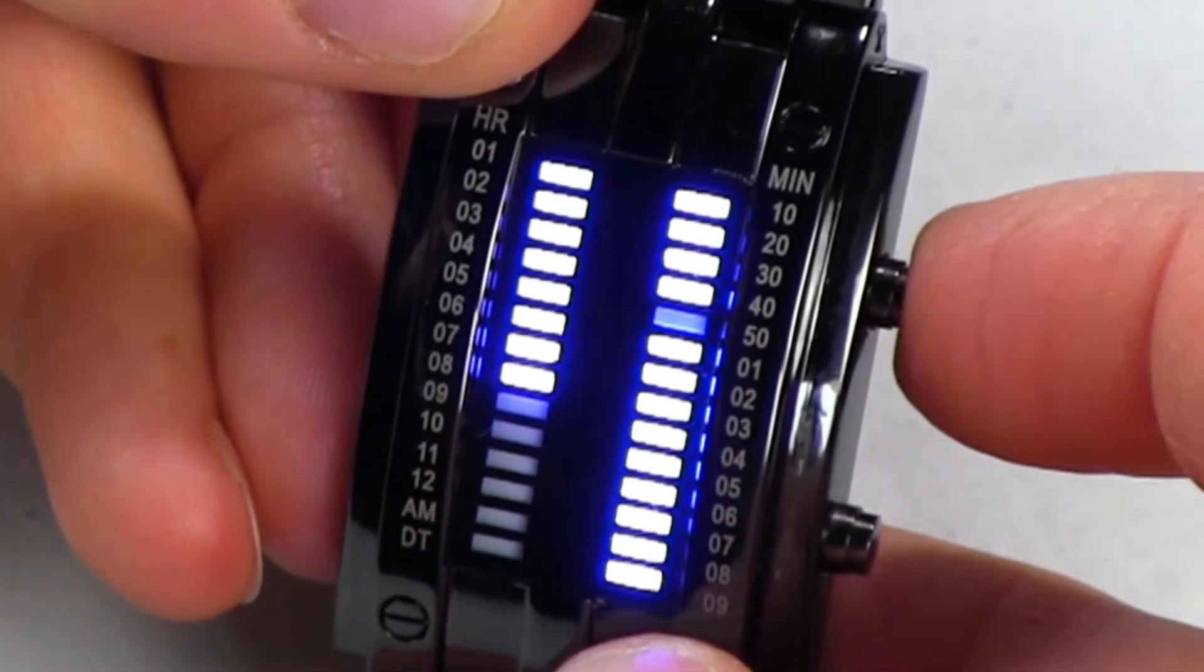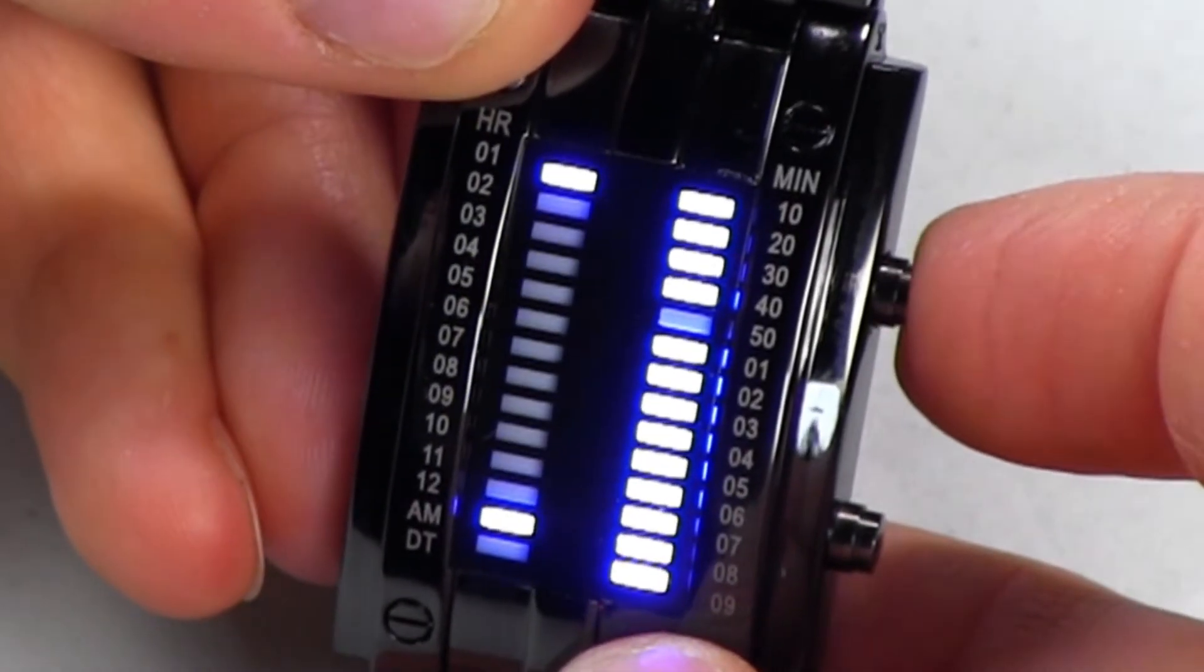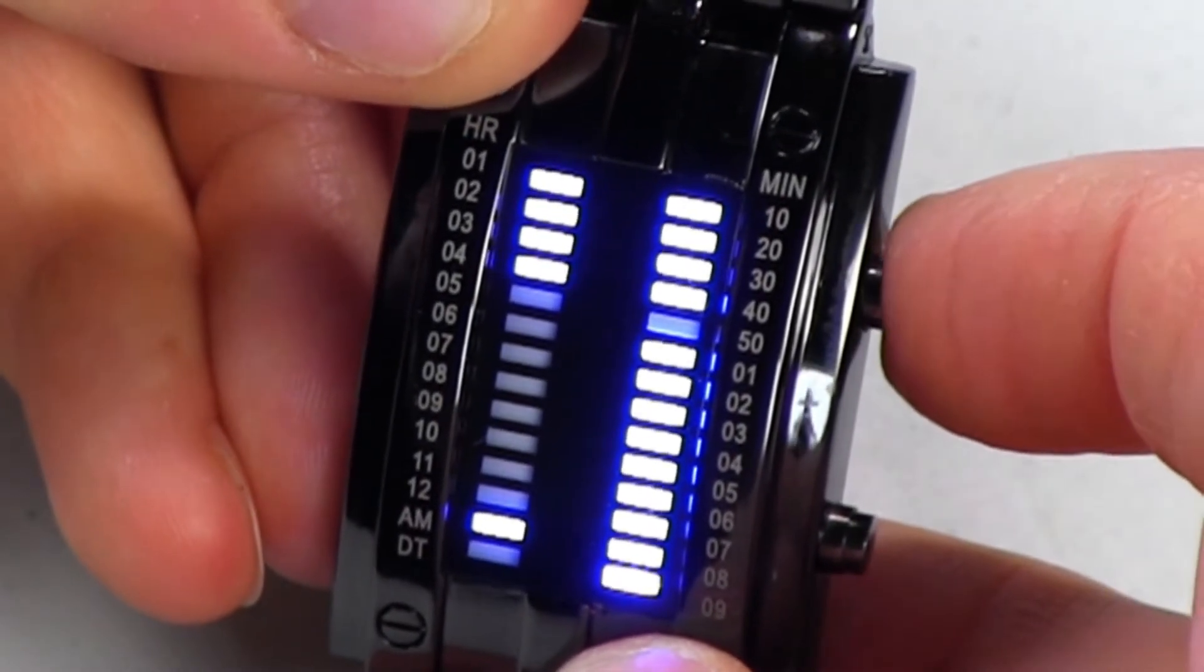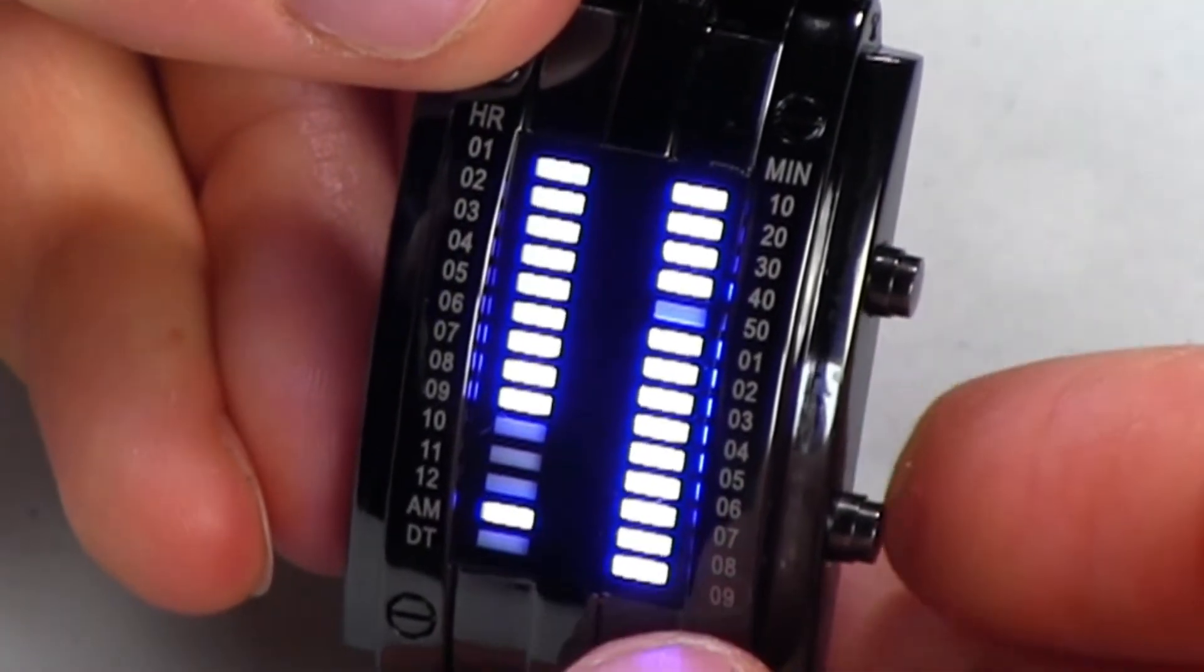So once I start hitting the button, you'll see the lights just keep blinking all the way down. Now you'll see that AM just turned on. It was set to 4 PM. We're going to set it to 9 AM. So right there is set to 9 AM.